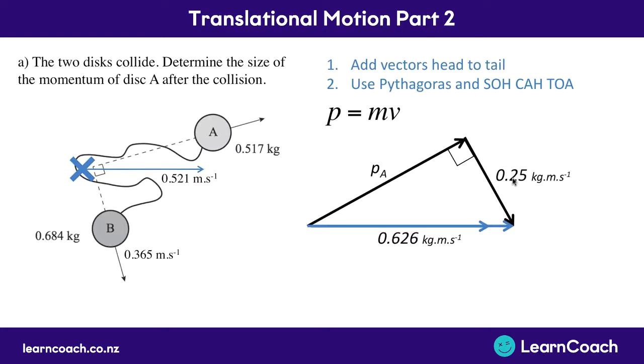So now that we know these, we can use Pythagoras to find out the momentum for A. So we have Pythagoras that A squared plus B squared equals C squared. Now we're going to have to rearrange it because we're now finding a shorter side to get A squared equals C squared minus B squared.